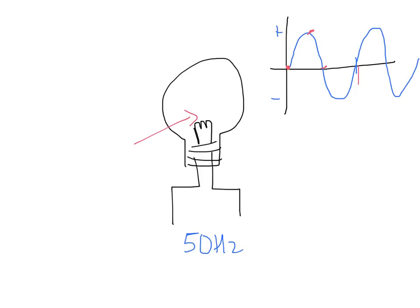If there are 50 cycles per second, you're actually getting a hundred flickers per second, because you get two zero-crossings per cycle. Luckily our eyes don't see that fast, so due to the frequency we're using we actually can't perceive the fact that light bulbs are flickering. But if the frequency ever dropped into the range visible to our eyes — not something that would happen with the national grid, but possible with some other power source — you would actually see the light bulb going on and off continuously. That phenomenon is called flicker.